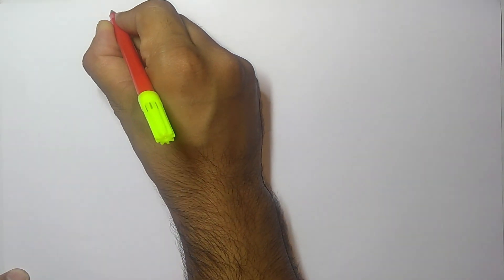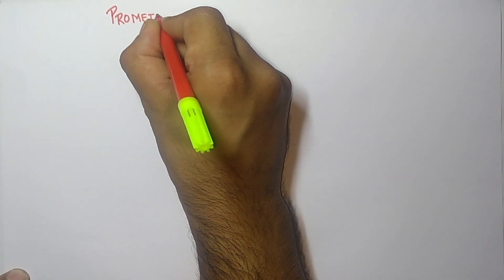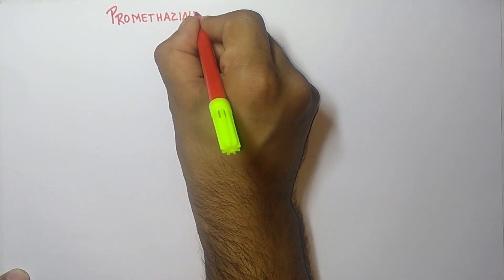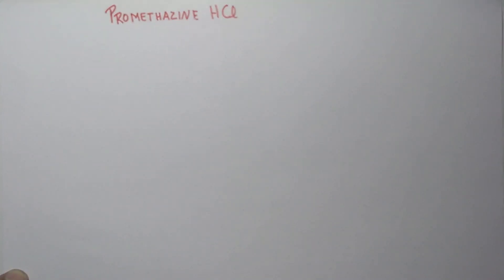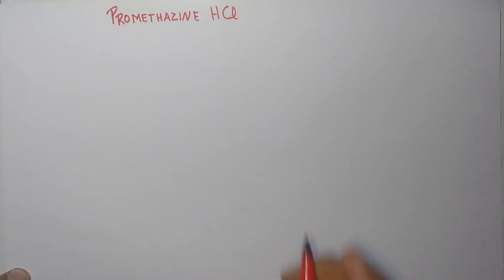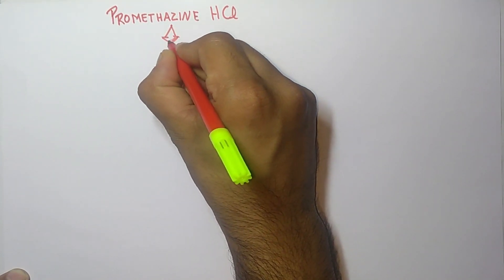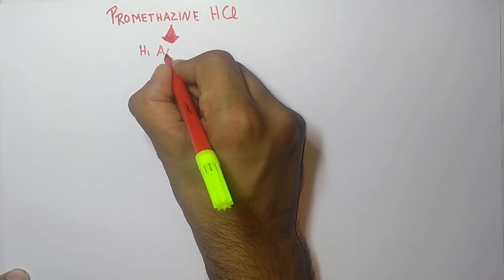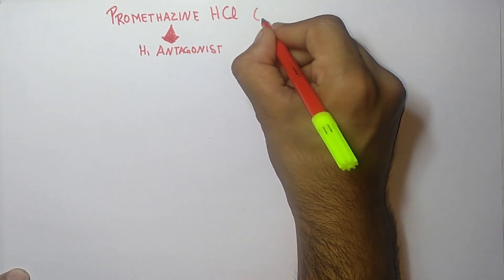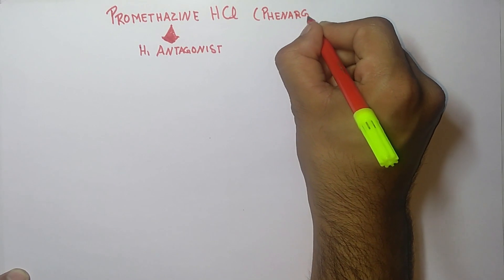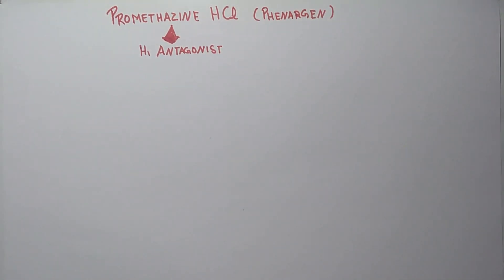Hello students, welcome to the channel. Today in this video we are going to discuss the synthesis of promethazine hydrochloride. It is an H1 antagonist and it is also known as Phenargin. Now let's discuss the synthesis part of promethazine.